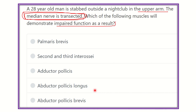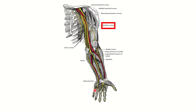Here we can see the median nerve. It travels in the upper and medial part of the arm and provides no motor supply to the arm itself. Then in the cubital fossa, after leaving the cubital fossa, it gives some branches and then descends down.